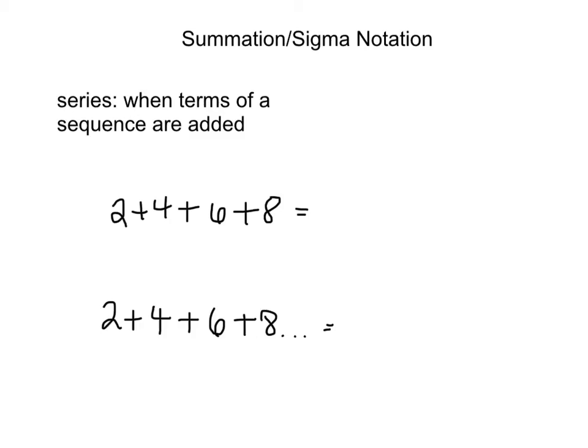Next, we're going to be covering sigma or summation notation. We first need to define what a series is. A series occurs when terms of a sequence are added. So, 2 plus 4 plus 6 plus 8. We can write this with sigma notation.